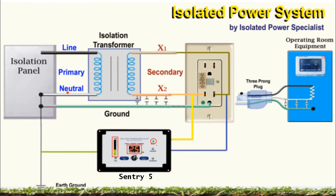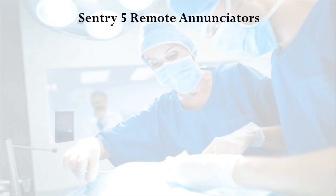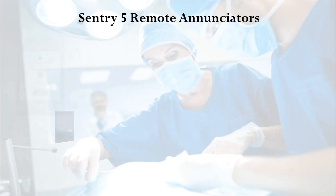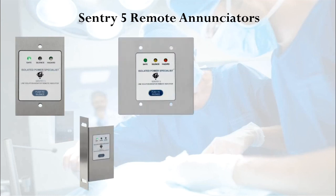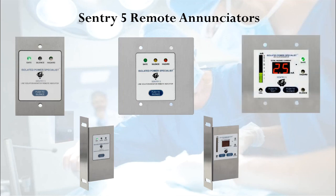Now, our last point. What if the line isolation monitor is mounted in a room other than where the work is being performed? In that case, we need a remote enunciator, like this one. This is a single-gain remote enunciator that has three criteria stipulated by the NFPA: the green light, the red light, and the audible alarm. However, Isolated Power Specialists makes various types of remote enunciators — single-gain panel-mounted, double-gain panel-mounted with digital display, double-gain with digital display, and many others.